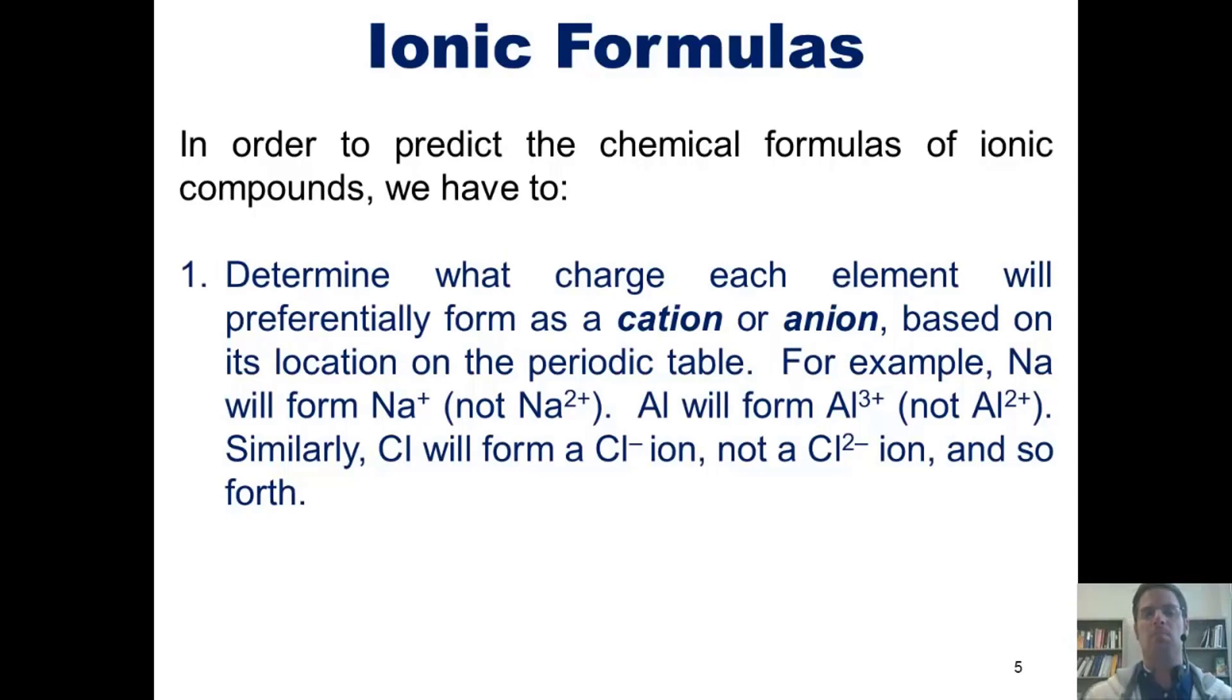Similarly, chlorine will form a Cl minus ion, or chloride anion, and not a Cl2 minus ion, because it's in group 7A of the periodic table, and so forth.